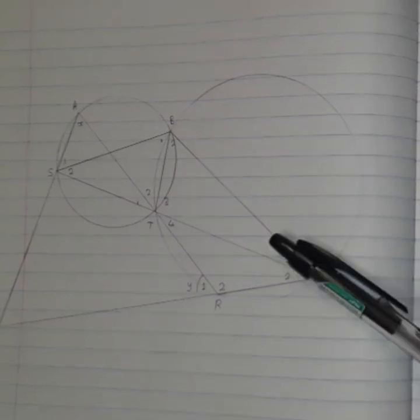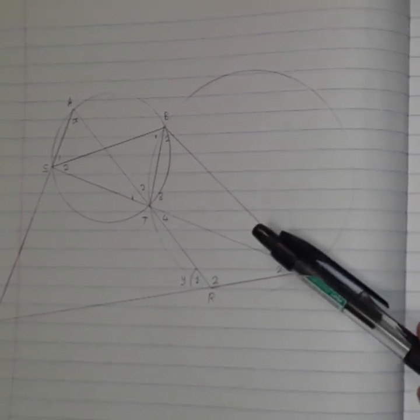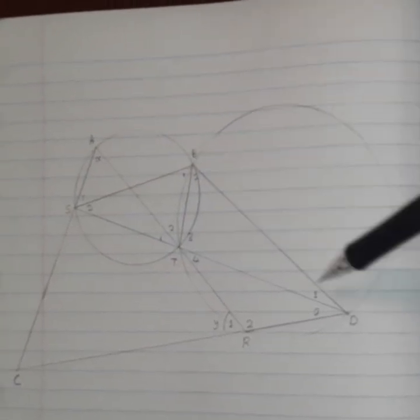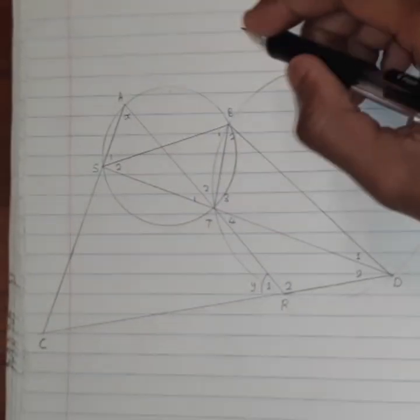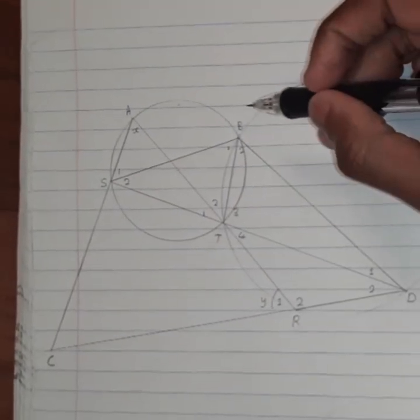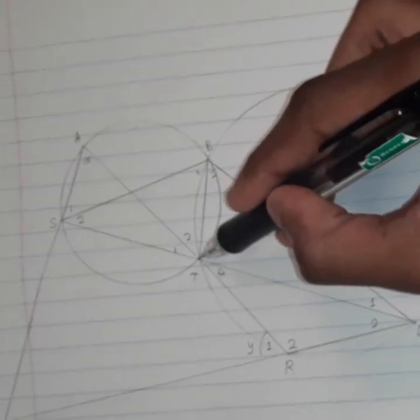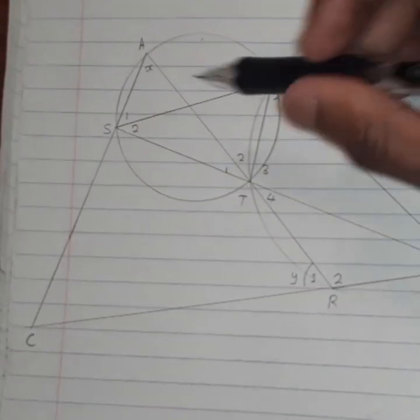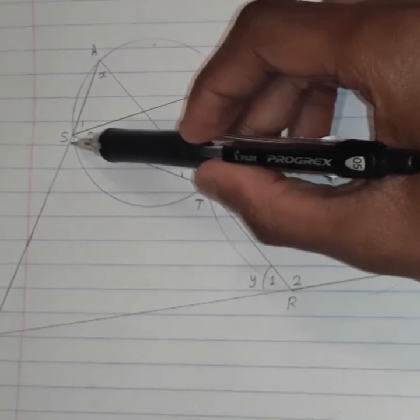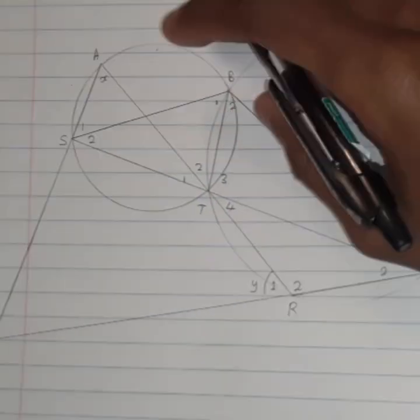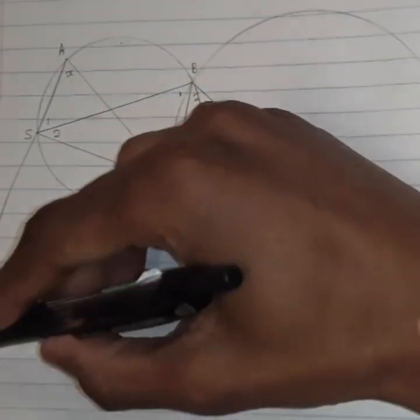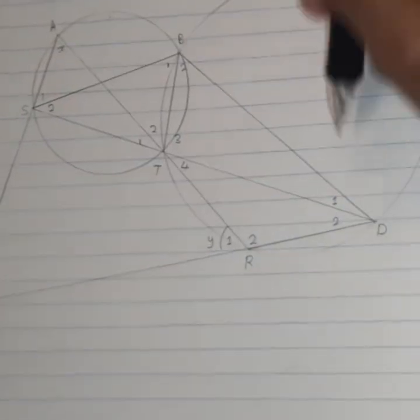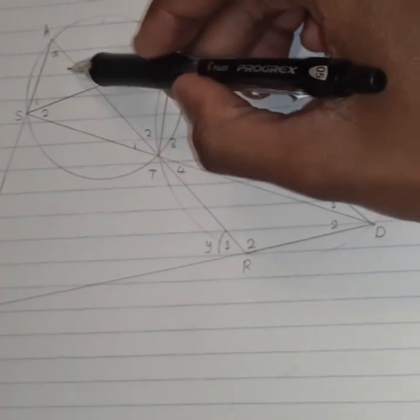In the diagram, a smaller cycle ABTS and a bigger cycle BDRT are given. BT is a common chord, and straight lines SD, STD, and ATR are drawn. Chords AS and DR are produced to meet in C, a point outside the two cycles, and BS and BD are drawn. We're given that A equals X and R1 equals Y.